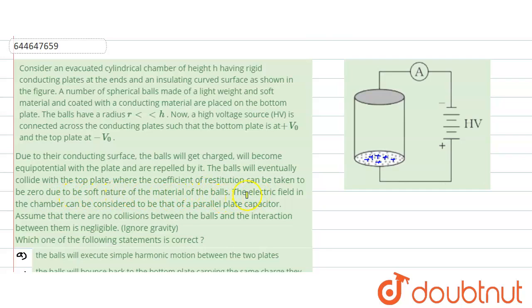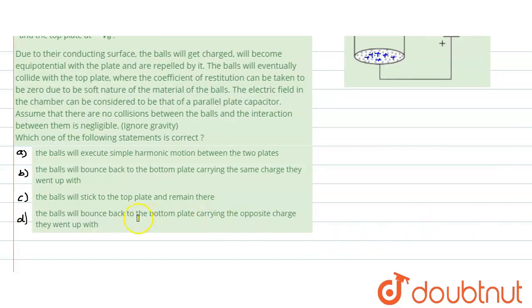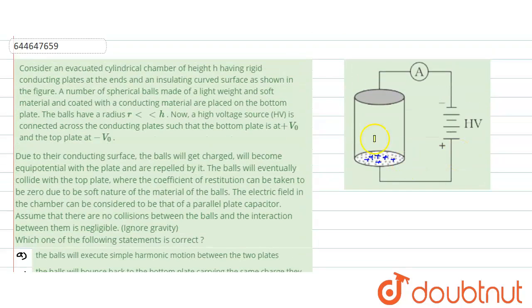They would be eventually moving here where the coefficient of restitution can be taken to be zero due to the soft nature of the material. The electric field in the chamber can be considered to be that of a parallel plate capacitor. Assume there are no collisions between the balls, the interaction between them is negligible, and there is no gravity. We need to determine the statement: if the balls will execute SHM between the plates, or they will bounce back to the bottom plate carrying the same charge which they went with, the balls will stick to the top plate, or the balls will bounce back to the bottom plate carrying the opposite charge when they went back.